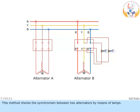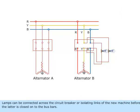This method checks the synchronism between two alternators by means of lamps. Lamps can be connected across the circuit breaker or isolating links of the new machine before the latter is closed onto the busbars.